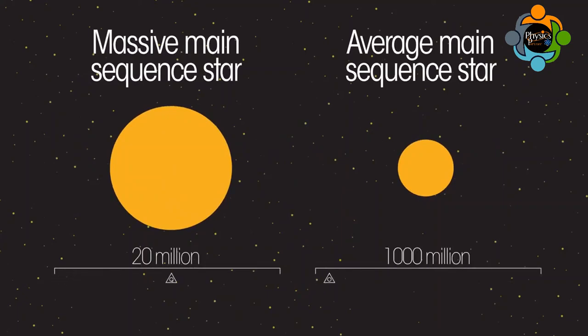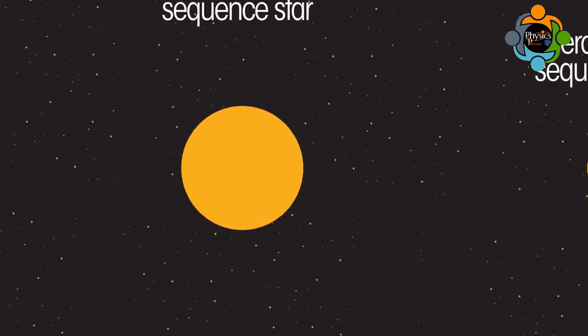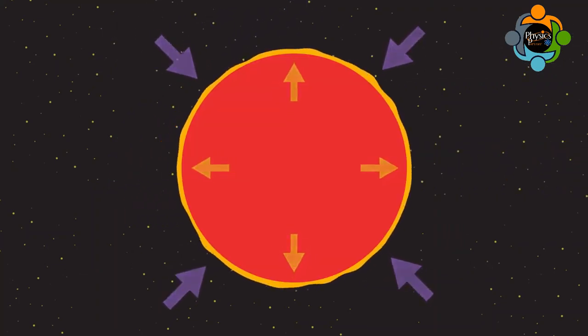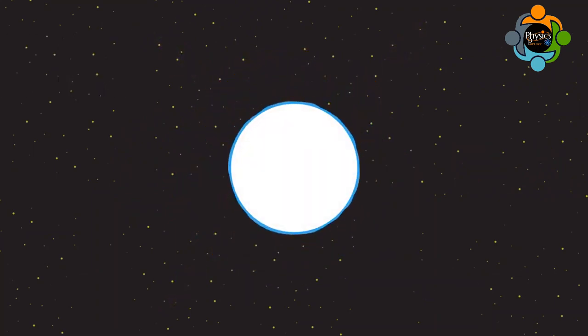What happens next depends on how massive the star is. A smaller star like the sun will gradually cool down and stop glowing. During these changes it will go through the planetary nebula phase and white dwarf phase. After many thousands of millions of years, it will stop glowing and become a black dwarf.